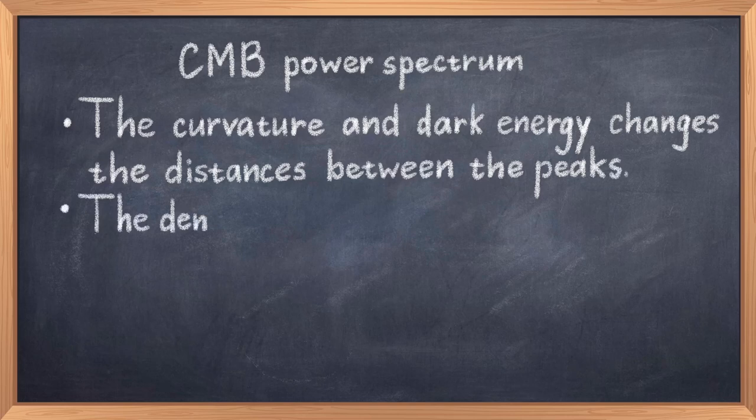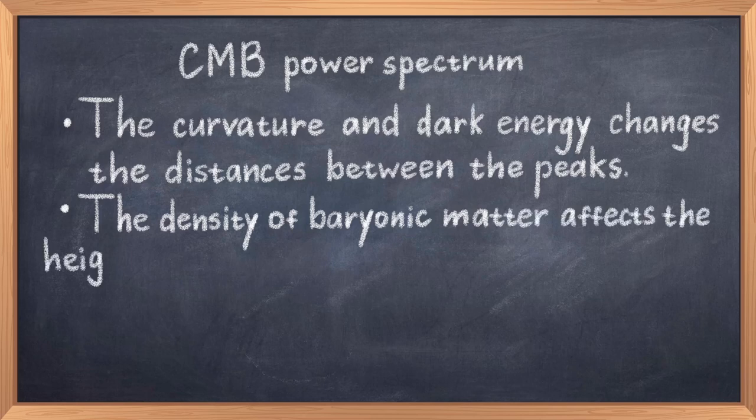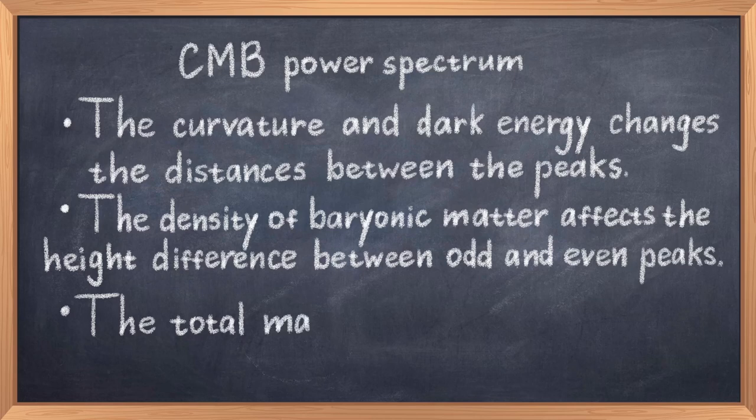Changing the matter density have a different effect. If you have more baryonic or usual matter, then the odd peaks become larger and the even peaks become smaller. If you have more matter in total, thus including dark matter, then it also affects if the odd or even peaks are higher. But generally speaking, more matter leads to a smaller amplitude in the spectrum, and less matter increases the overall amplitude. This should give you an idea of how the different parameters create different results.